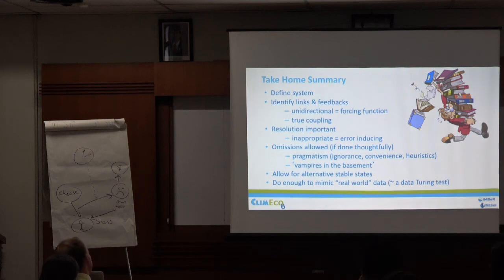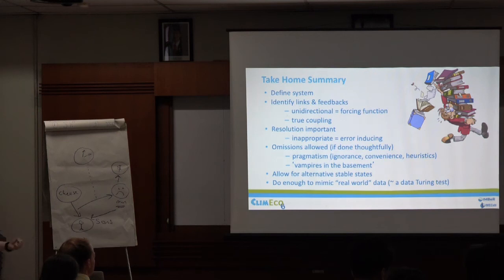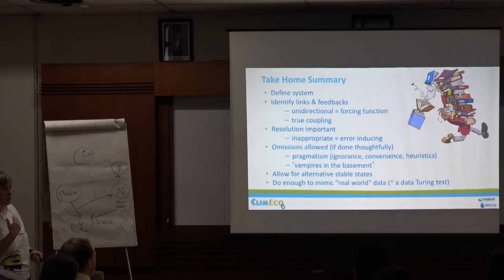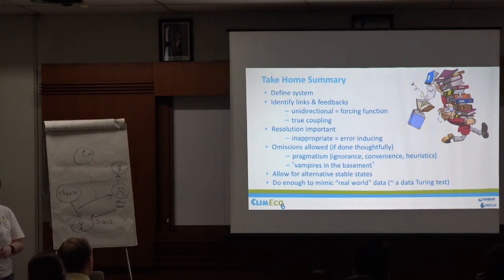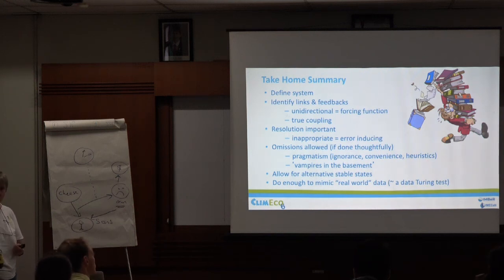To sum up: you need to define your system, identify the links — whether one-way or two-way — think about how much you want to resolve, which bits you're intentionally leaving out, and whether you can actually mimic the real world. Think of it like a Turing test for models: is the model creating a dynamic that's believable like the real world? Or is it such a cartoon that it gives insights but isn't delivering on what you need? That's the ultimate test.